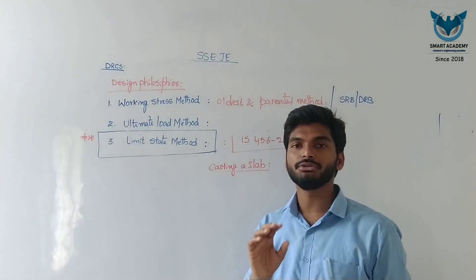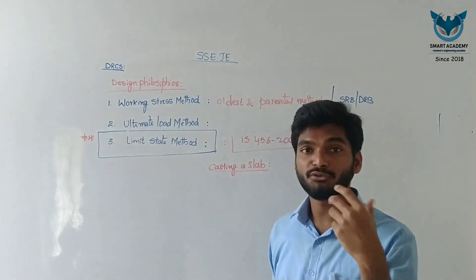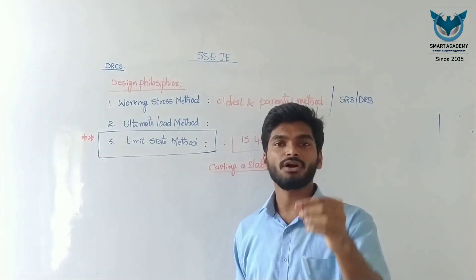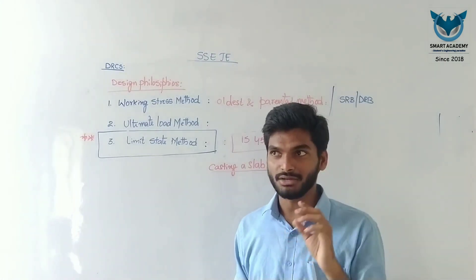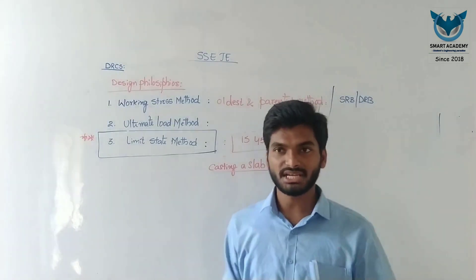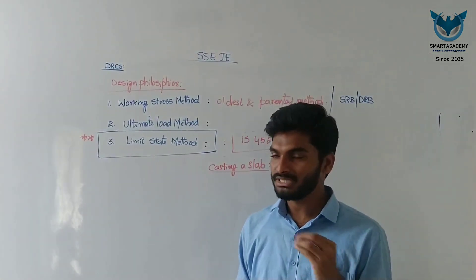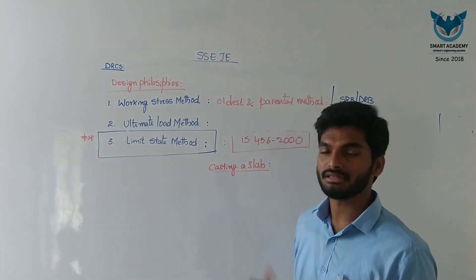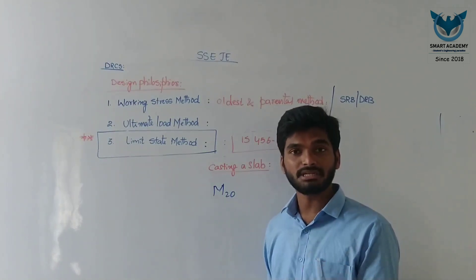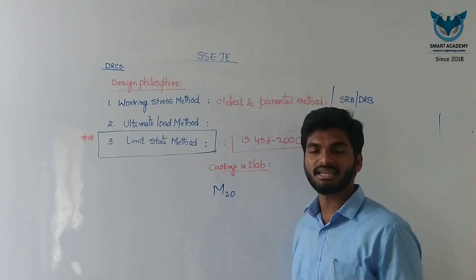Before explaining all three methods in detail, let me discuss concrete grade selection. When casting a slab, which grade of concrete will you use? You might think M10, M15, or M20. Generally, for slabs we cast with M20 concrete.